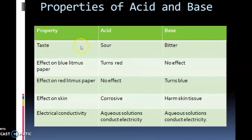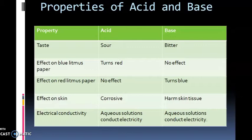Acids are sour in taste, while bases are bitter. Regarding the effect on litmus paper: if you dip blue litmus paper into an acidic solution, it turns red. If blue litmus paper does not change color, the substance is a base.